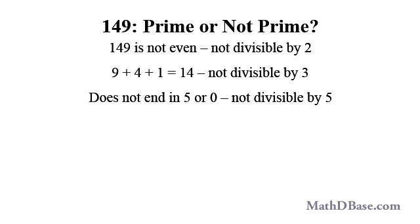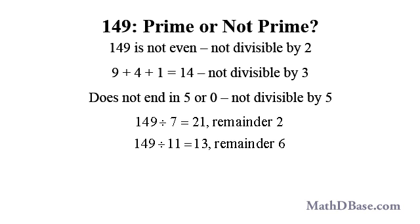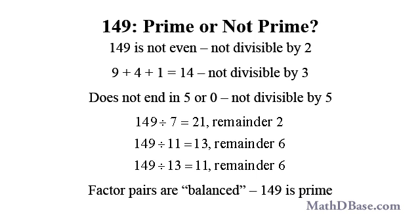So we can begin by systematically testing the divisibility of 149 by larger prime numbers. Trying division by 7: 149 divided by 7 equals 21 with a remainder of 2, so 7 is not a factor. Trying 11: 149 divided by 11 equals 13 with a remainder of 6, so 11 is not a factor either. Trying 13: 149 divided by 13 equals 11 with a remainder of 6, so there is no prime number smaller than 13 that is a factor of 149. Since 13 times 11 equals 143, 11 is less than 13, and factor pairs are balanced, as we saw in Part 3, prime factorizations. If there were a prime factor, it would have been identified already, so 149 is prime.